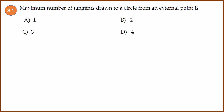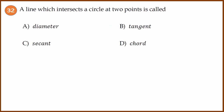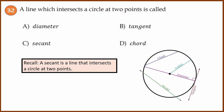Question 31 is a simple definition question. The maximum number of tangents drawn to a circle from an external point is 2. Question 32: a line which intersects a circle at two points is called a secant. Chord and diameter are not defined as lines that intersect at two points — the answer is secant.